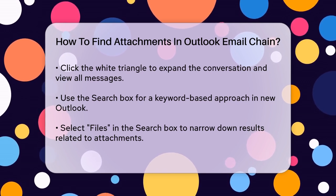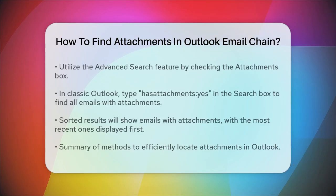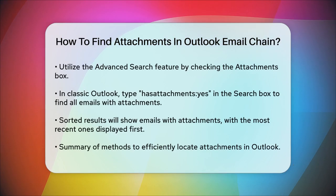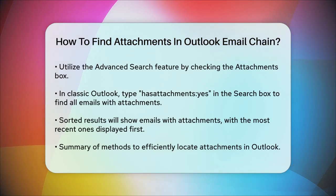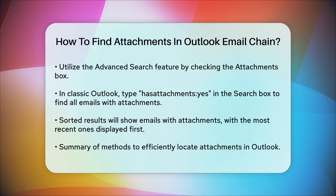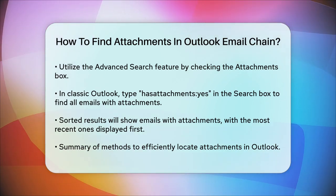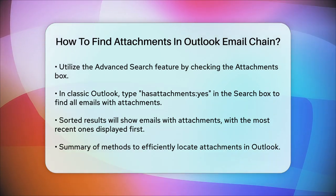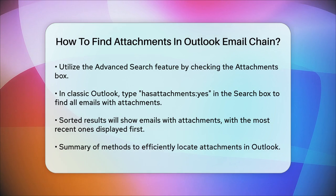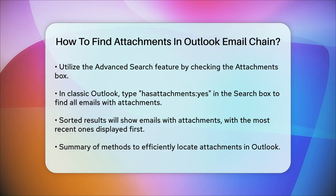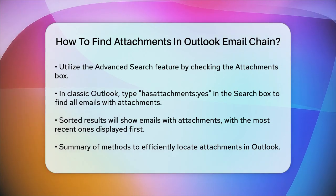In classic Outlook, you can use the search box at the top of the message list and type 'has attachments: yes' to find all messages with attachments. This will display all emails with attachments, sorted by date with the most recent ones first.